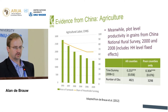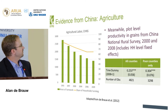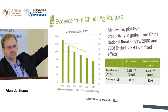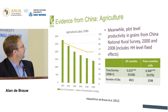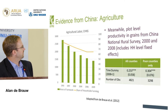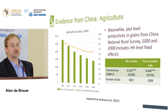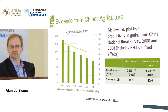Looking at plot-level productivity: from a separate panel survey, using a regression with just the time dummy — controlling for village fixed effects for the main grain in each village — we see that crop productivity went up by 25 to 30 percent depending on whether you're looking at all counties or poor counties during a time of substantial migration. So we're seeing productivity levels actually go up quite a bit, not down.